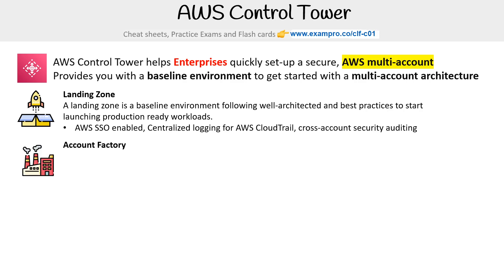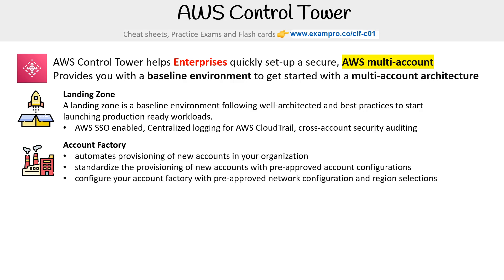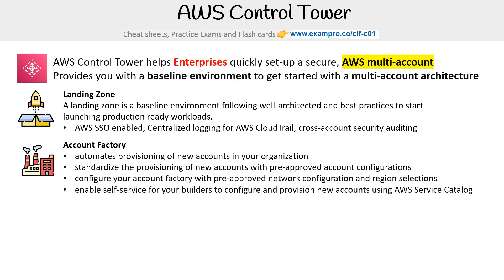Then there's the Account Factory — they used to call this a vending machine, but they changed it to Account Factory. The idea is that it automates provisioning of new accounts in your organization, standardizing provisioning with pre-approved account configuration. You can configure Account Factory with pre-approved network configuration and region selections, and enable self-service for your builders to configure and provision new accounts using Service Catalog — pre-approved workloads via CloudFormation templates that define which servers or resources users are allowed to launch.